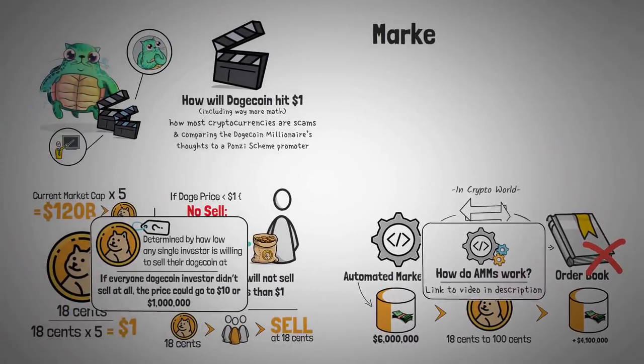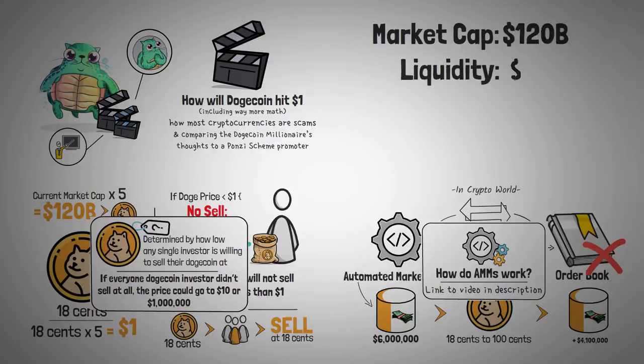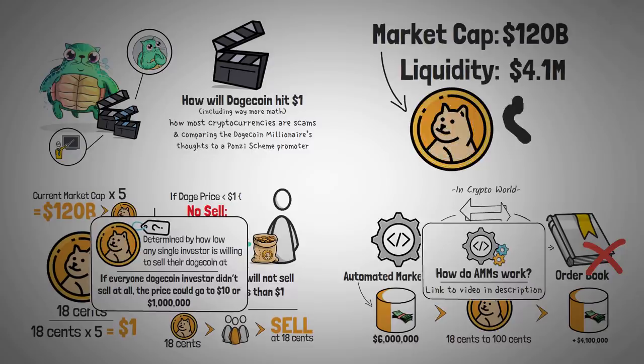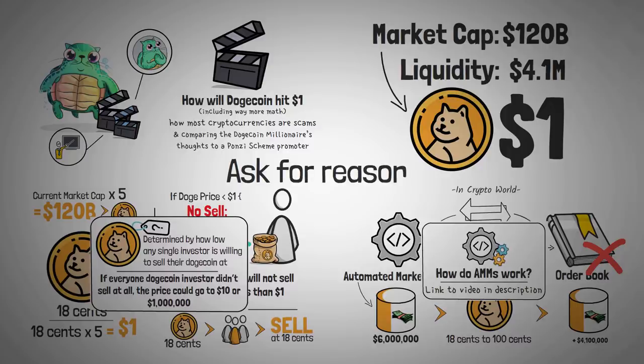Using the market cap method, we would need around $120 billion. And using the liquidity method, we would need $4.1 million. So I can reasonably guess to hit $1, we would need somewhere between $4 million and $120 billion. Now, this is kind of a pathetic guess, but it shows you how much we really cannot forecast when it comes to crypto. If anyone gives you a number, listen to their reasoning behind why more than the specific number.